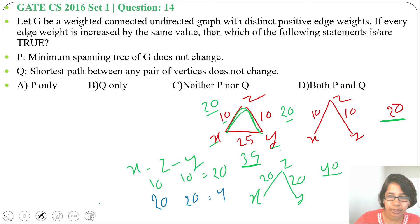While the other path from X to Y is 35, so 35 is less than 40.